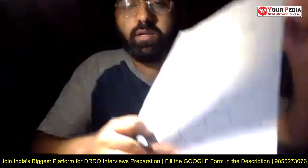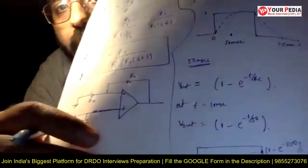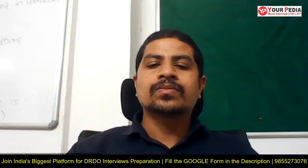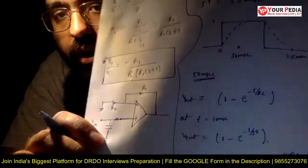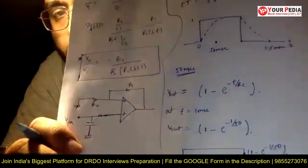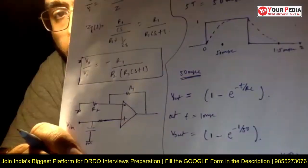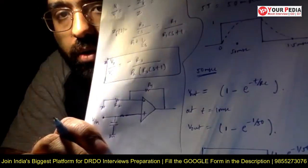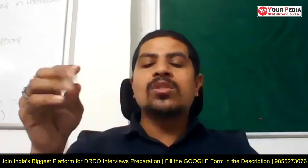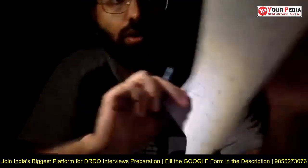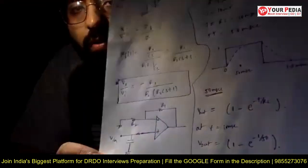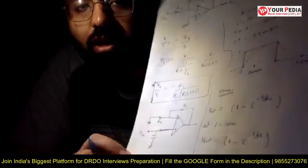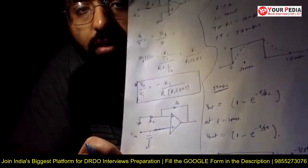Sir, here I can write the Vout equation, which is 1 minus e raised to the power minus t by 50. At 1 millisecond, the capacitor charges up to the value given by this equation: 1 minus e raised to the power minus 1 by 50. Then from that value, it starts discharging. Does it ever reach steady state like 1.99 or 2 volts? No sir. Why? Because at the moment it starts to reach that value, it starts discharging again, and the cycle repeats.